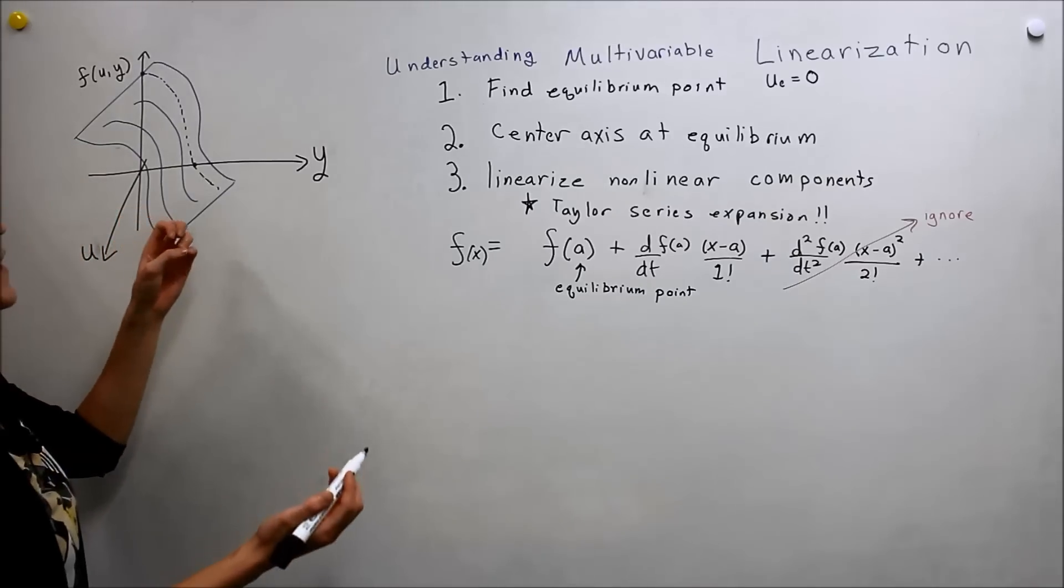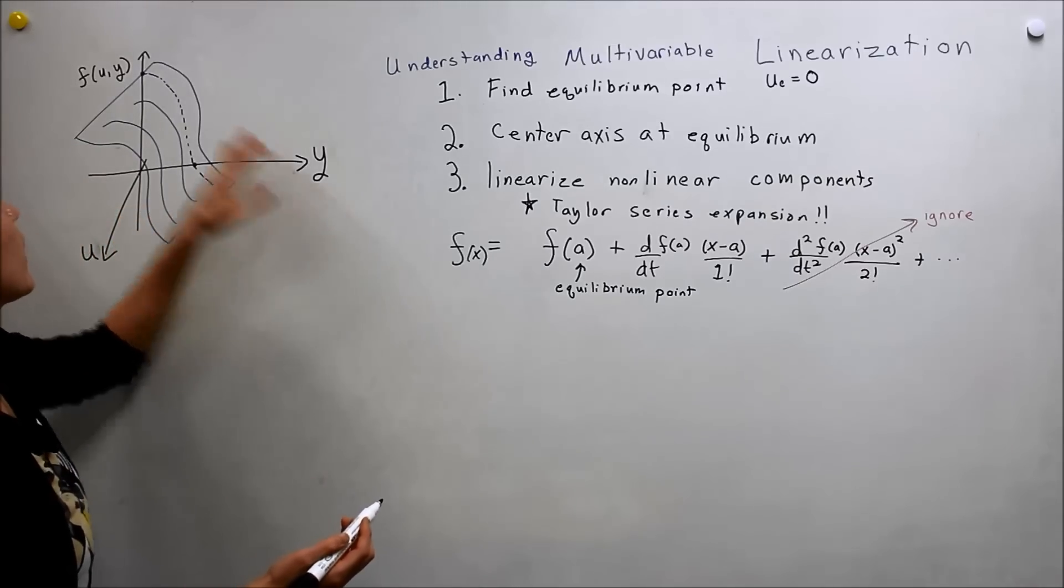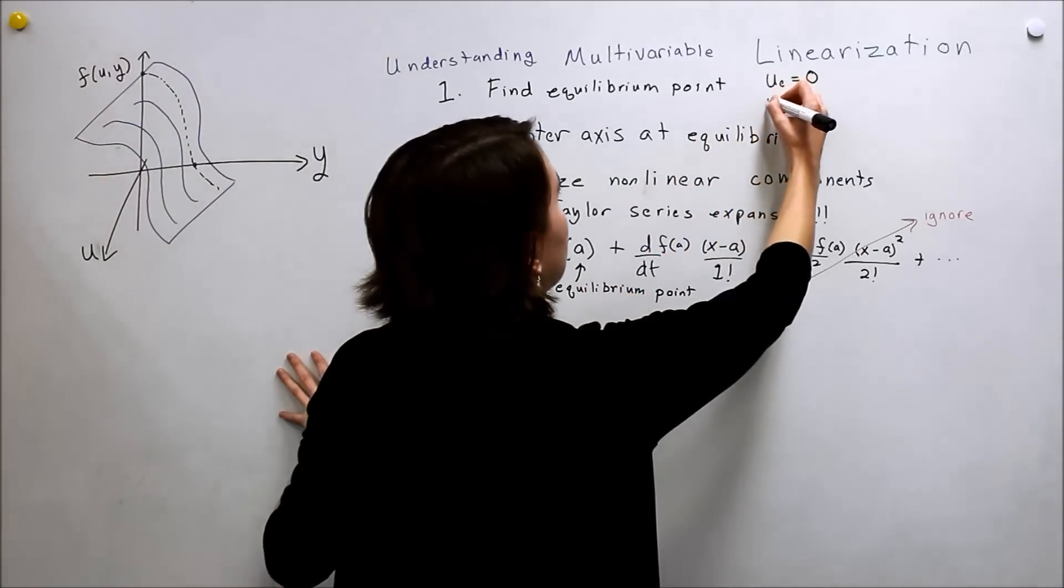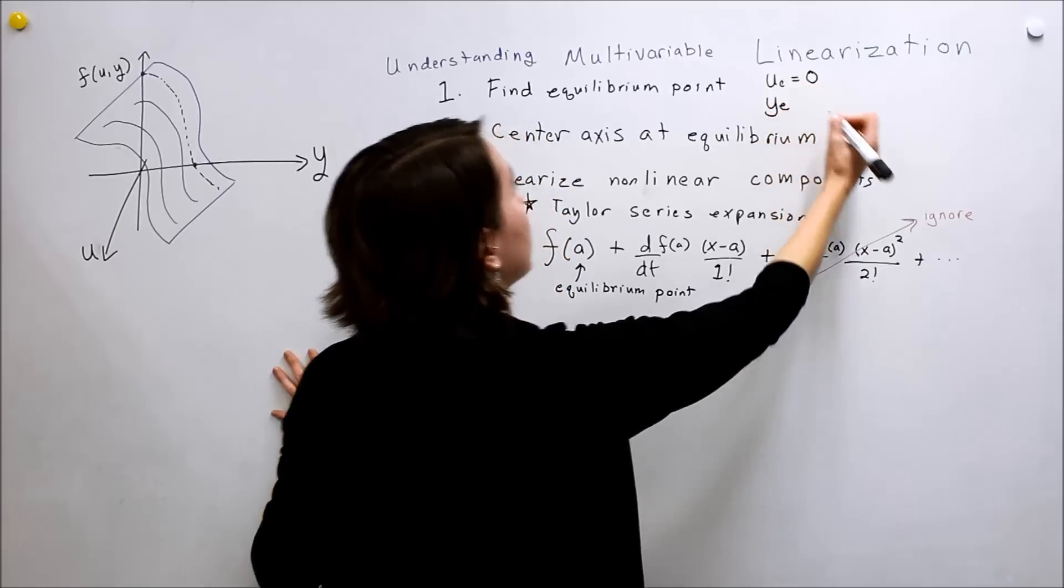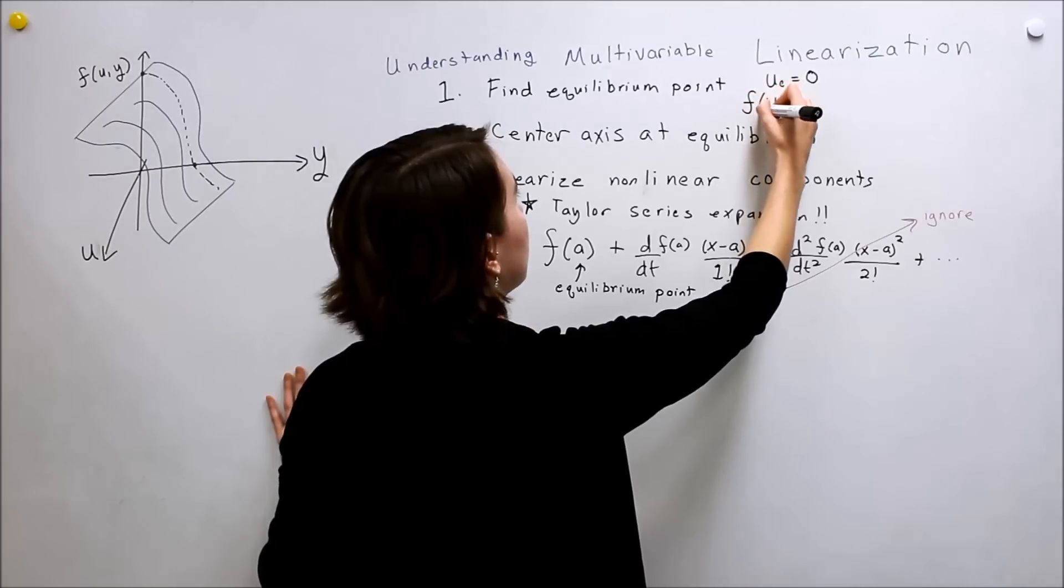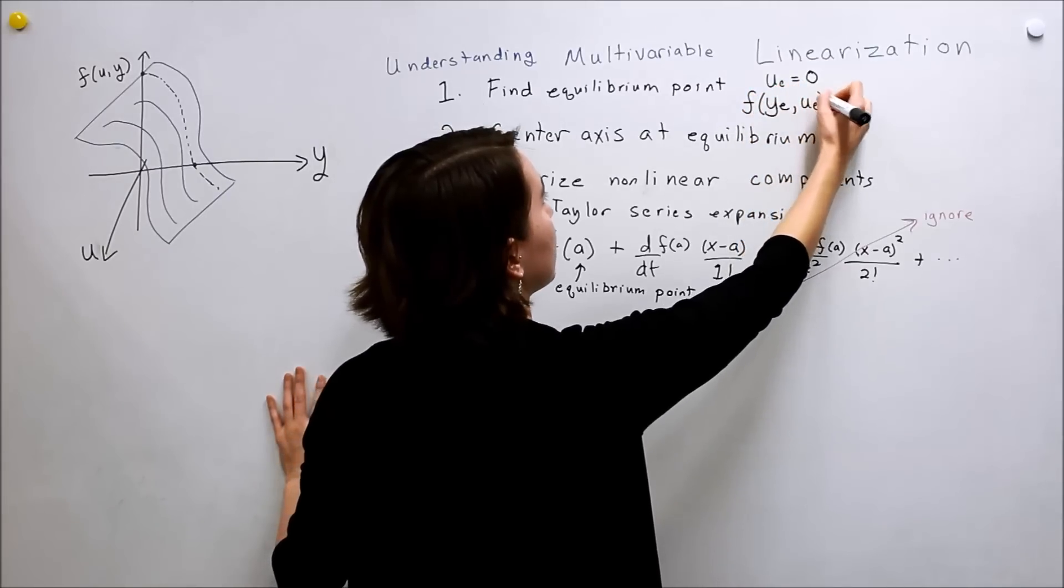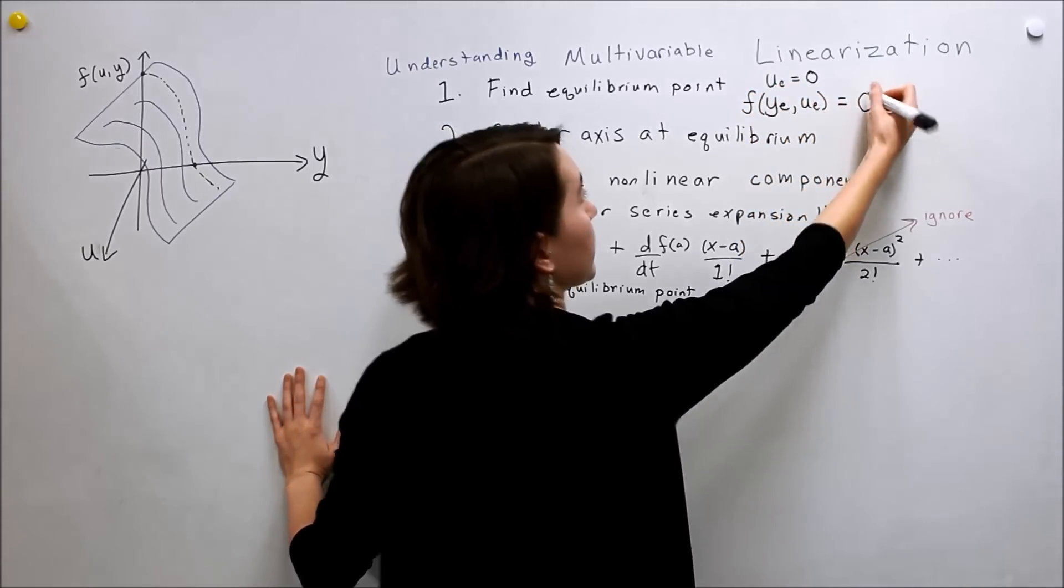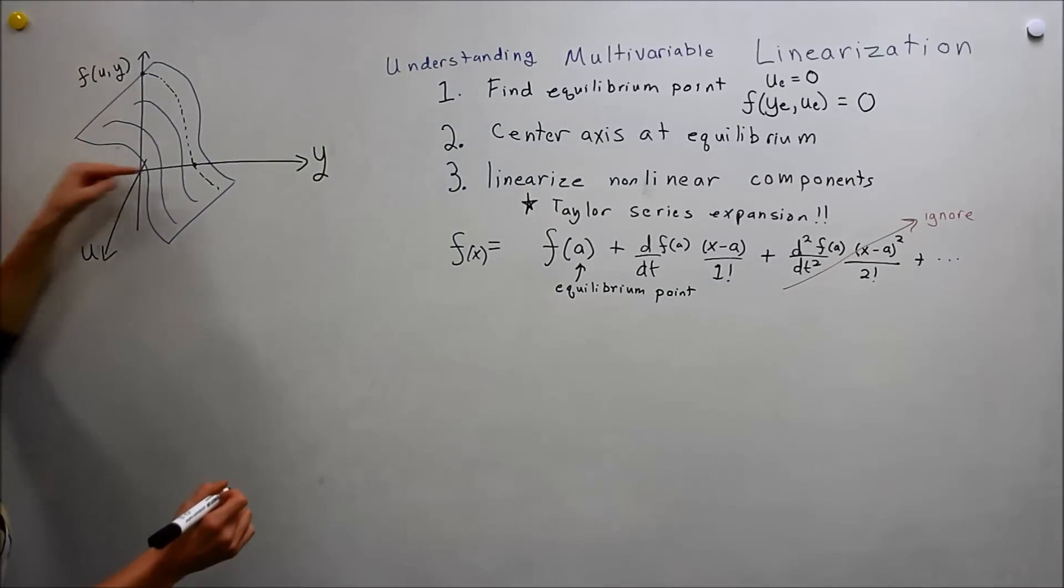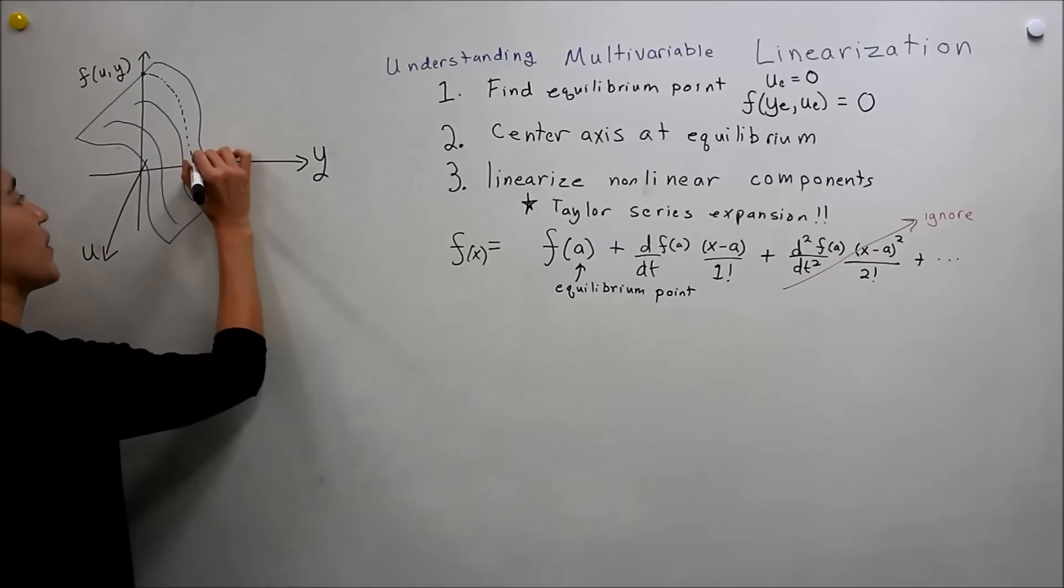Well, then we have to find the equilibrium point where this function is actually equal to zero. So y_e is where f of y_e and u_e is equal to zero. So what that means is that where is this equal to zero? Well, now we see that it's just one point. So it's this point right here.